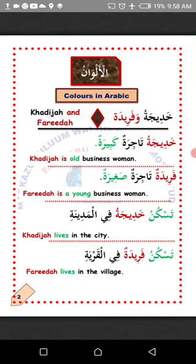Remember that the Arabic word alwaan is the plural form of lawnun, meaning color. Lawnun is the mufrad (singular) form, and alwaan is the jamu (plural) form.